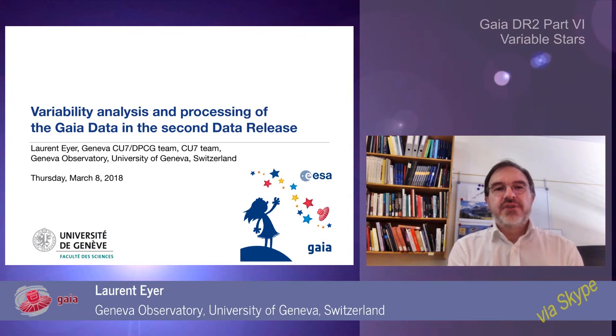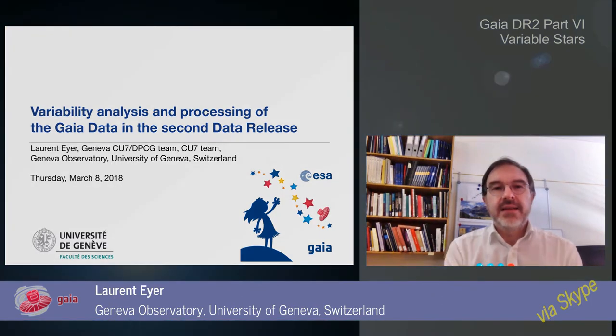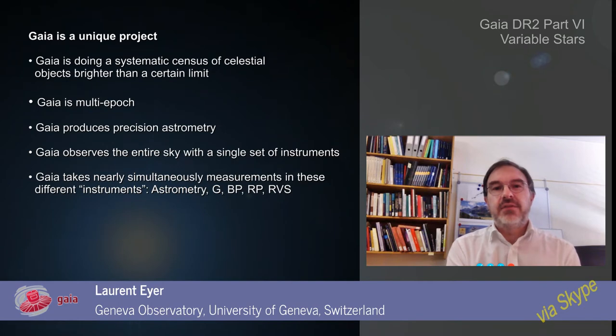I will present the results for the second data release on the variability analysis and processing of the Gaia data. Gaia is doing a systematic census of celestial objects brighter than a certain limit.